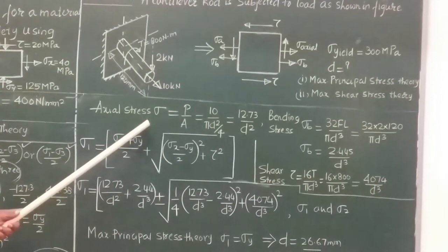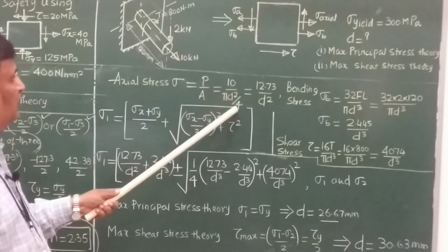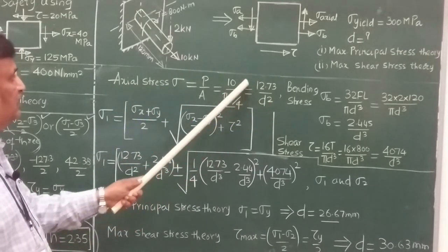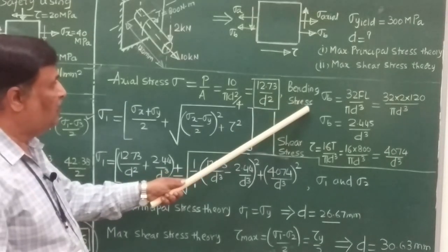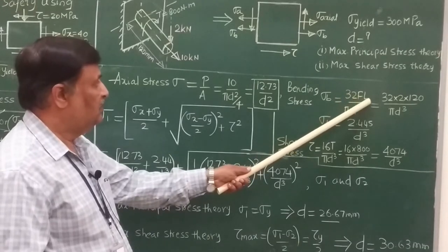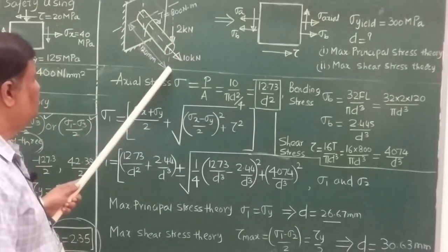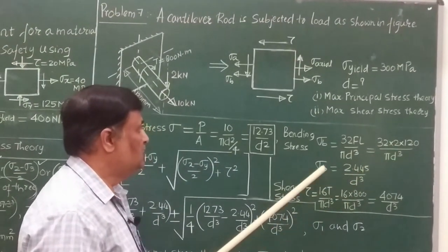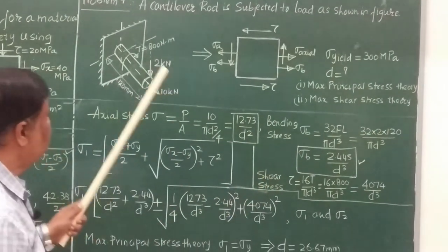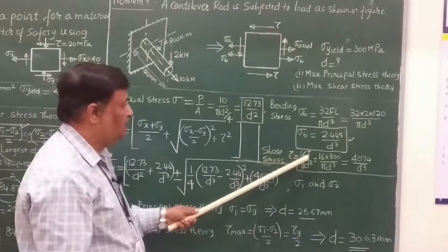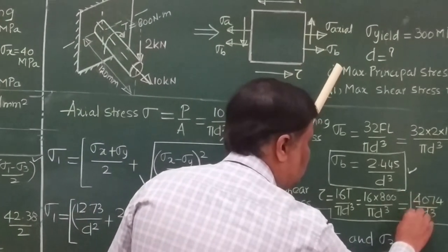First, let us find the axial stress, bending stress, and shear stress. Axial stress = load / area = 10 kN / (πd²/4), kept in terms of d. Bending stress σb = 32M / (πd³), substituting bending load of 2 kN and length 120 mm, giving 2.445/d³. Shear stress from the twisting moment = 16T / (πd³) = 16 × 800 / (πd³), giving 4074/d³.